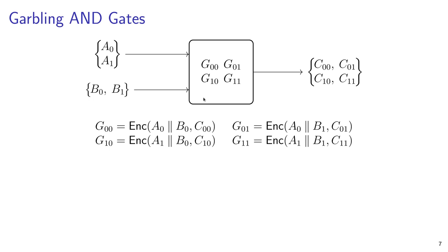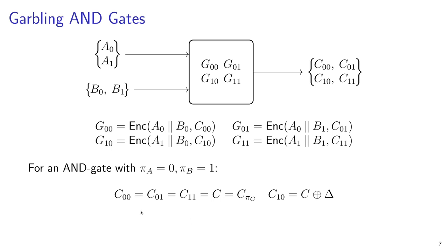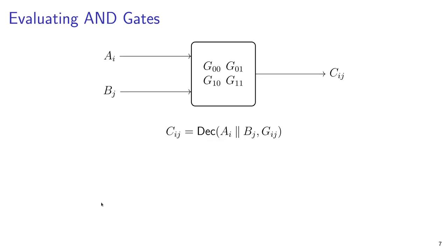In a classic garbled circuit, the other gates in the circuit become encrypted lookup tables. If we are given only a single wire label from each input wire, only a single output may be decrypted. The garbler gives the evaluator an encrypted gate containing the four gate ciphertexts g00 and so on. AND gates have three ways to evaluate to false and one way to evaluate to true. Let c be the wire label representing false. Three of the four gate outputs must be c, while the remaining output must be c XOR delta to represent true. When the evaluator gets inputs AI and BJ, it can only decrypt CIJ, the correct output wire label.